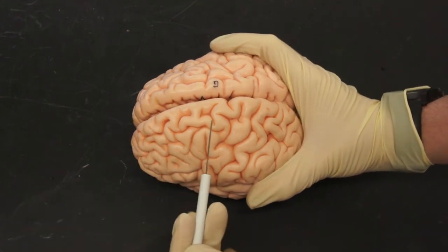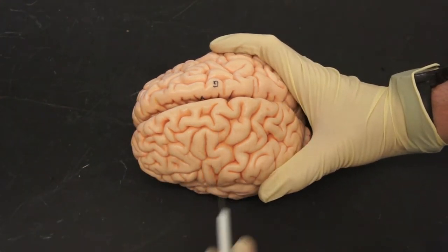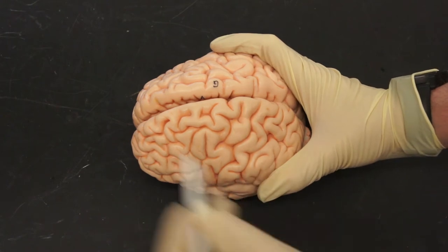In front of the central sulcus, we have the precentral gyrus, this bump, and in back, we have the postcentral gyrus.